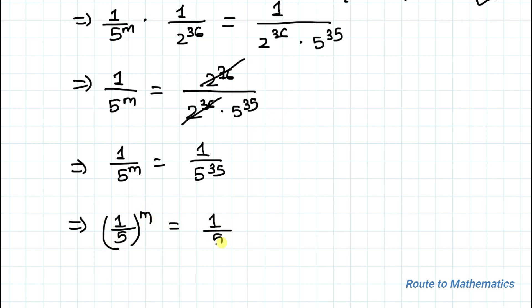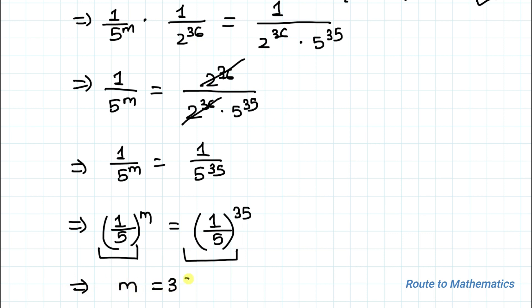Here we can see that on both sides the bases are the same, so we can equate the exponents: m equals 35 is our answer. I hope you have understood the solution. Thanks for watching — please do subscribe to my channel and hit the like button for more such interesting videos. Thank you.